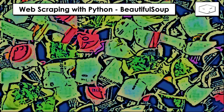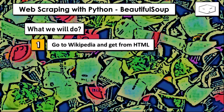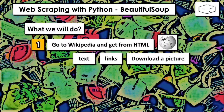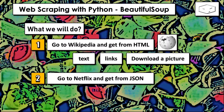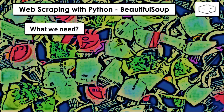Hello again. Here's what we will do: first we will go to Wikipedia and get from HTML text, links, and download a picture. Then we will go to Netflix and get from JSON information about a movie.